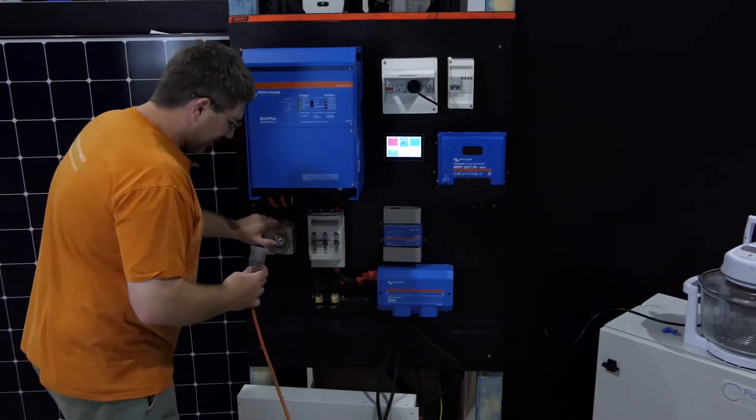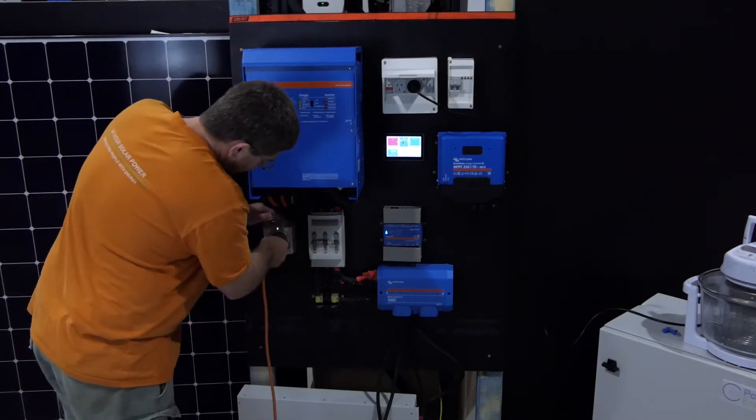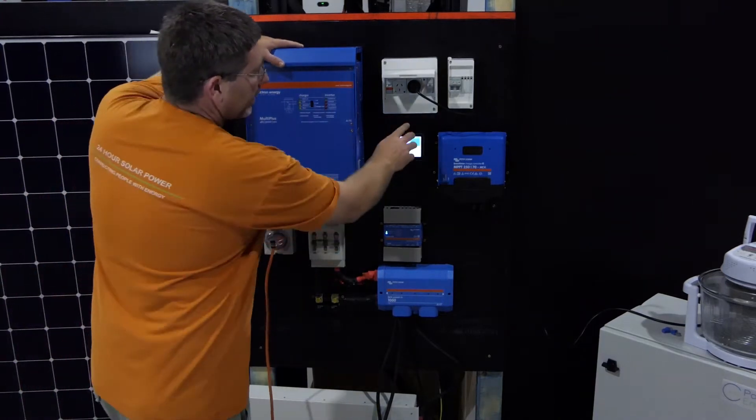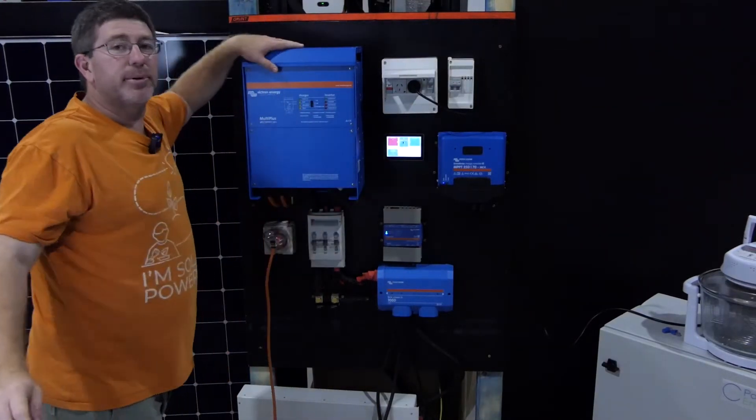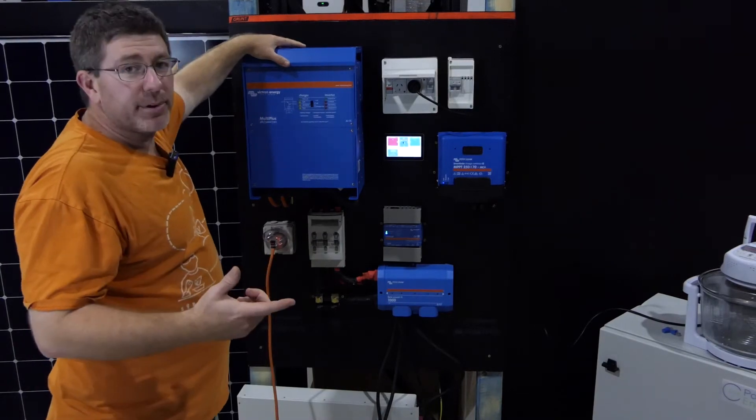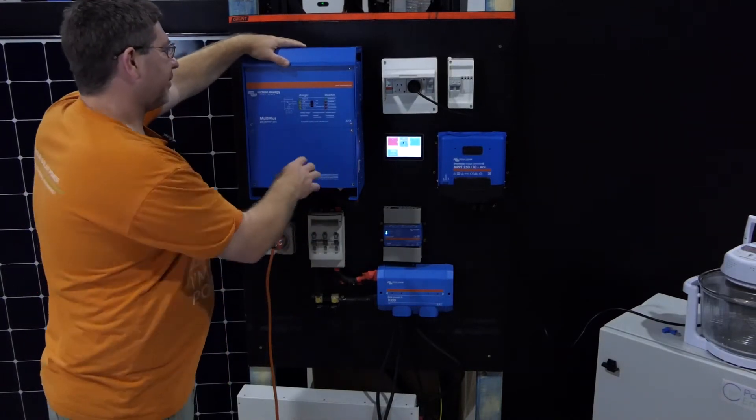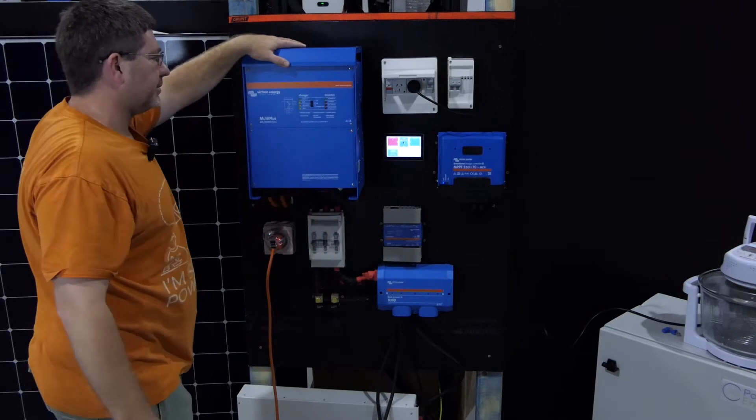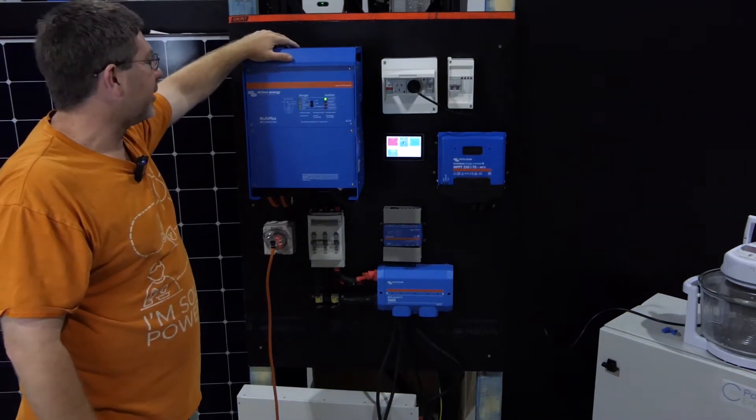So then you want to plug your generator in. Once your generator is plugged in, you then want to turn on your input to your generator. So you want to turn the input to the generator on so the 240 comes through and then flick your inverter back on.